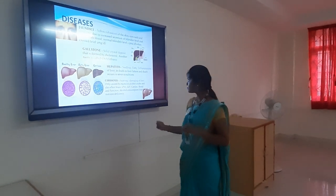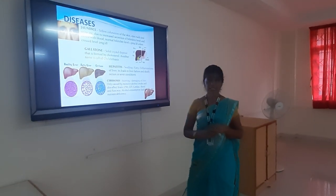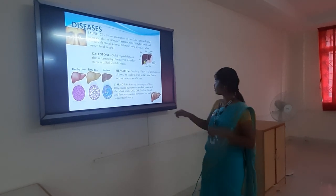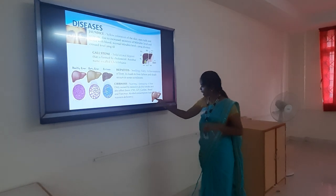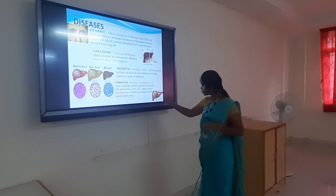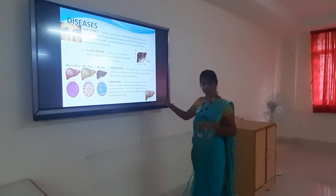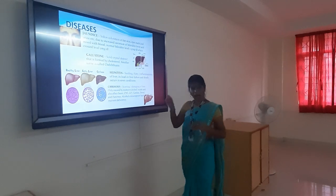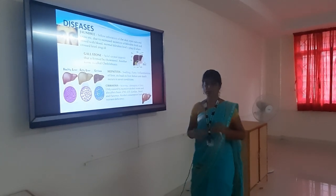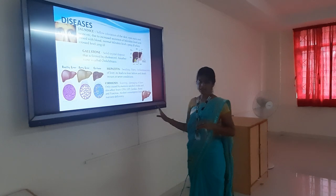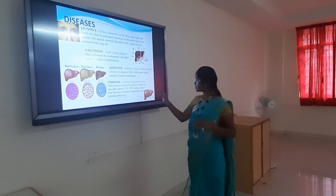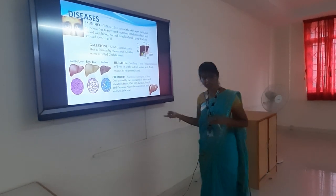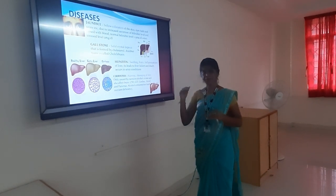The final liver disease is cirrhosis. Cirrhosis is nothing but scarring or damaging of the liver. This is a cirrhosis liver, and this is a normal liver. In cirrhosis, the liver's good tissues are scarred and unable to work. This condition is the end stage of liver disease, and after that, the patient is counting their death days.